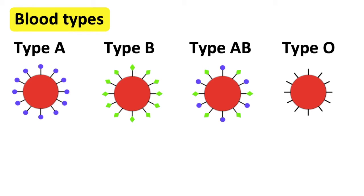The body has three alleles which code for a specific gene. Allele A codes for antigen A, shown as the purple circles in the picture. Allele B codes for antigen B, shown as the green diamonds. Allele O doesn't code for either, which is why with type O blood there are no antigens.